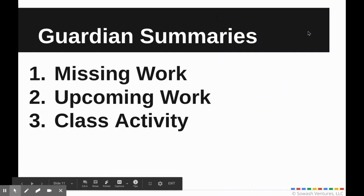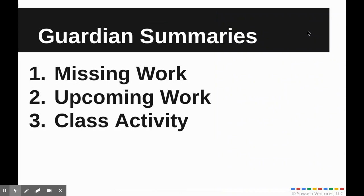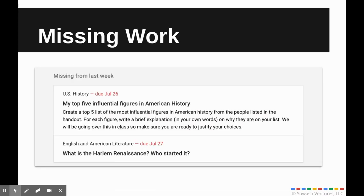Once you've accepted the invitation to receive Guardian Summaries you'll begin receiving those emails. Each summary is divided into three parts: missing work, upcoming work, and class activity. The emails can be short or long depending on how many activities and assignments the teacher has posted during the week. The first section will be missing assignments — here we can see that the student has two missing assignments: one in U.S. History and one in American Literature. Now you won't be able to click on these assignments or get into Google Classroom, but you can use these as a discussion point. When your student returns from school you can say, 'Hey, I see you have two missing assignments — what do we need to do to make sure those get turned in?'